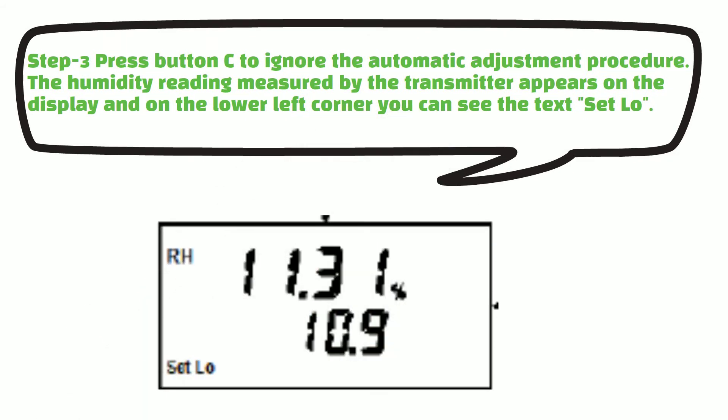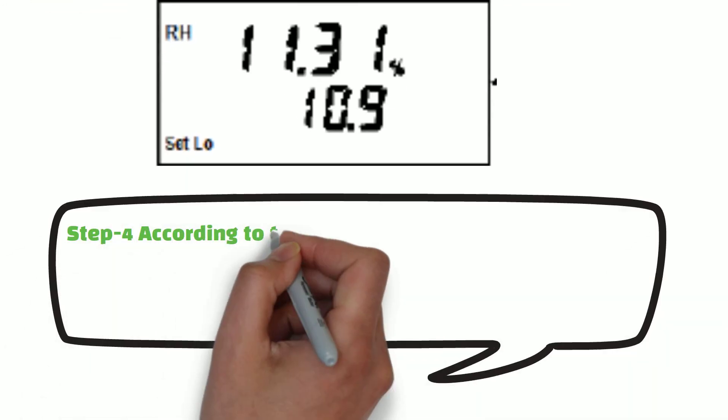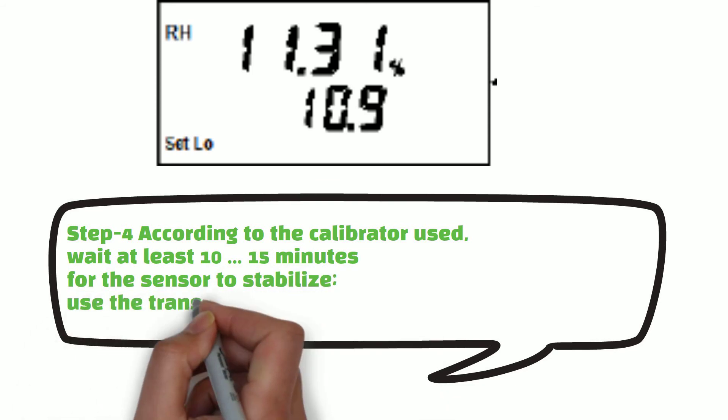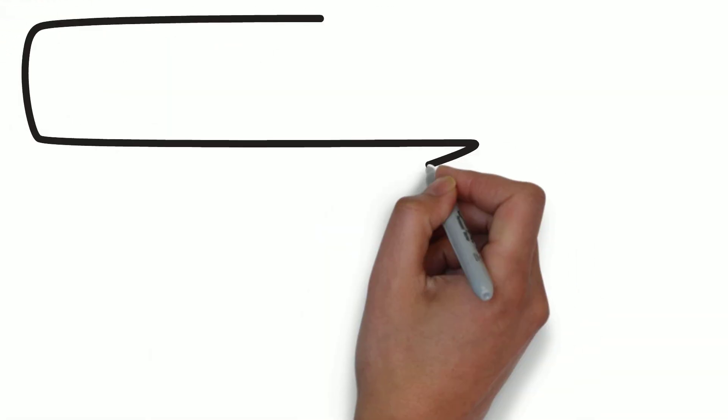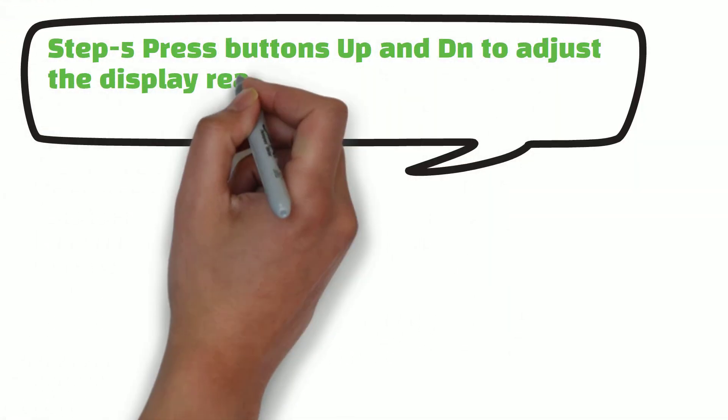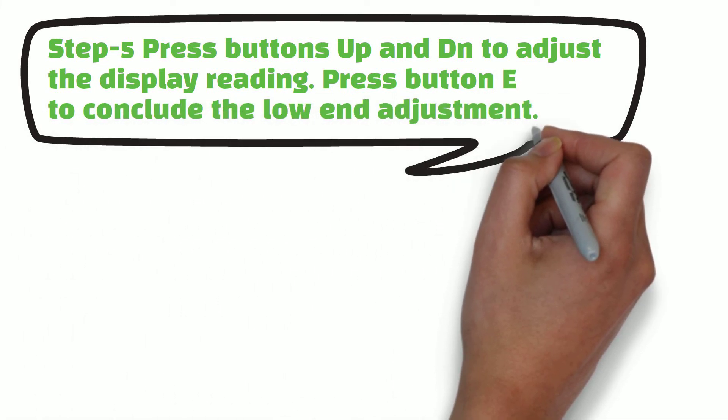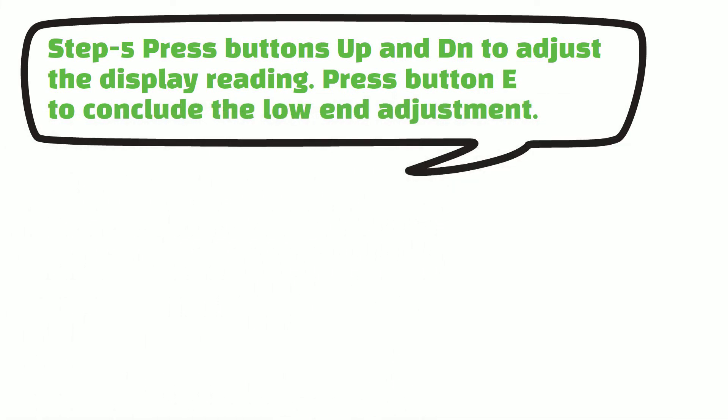In this step, you have to be patient and wait 10 to 15 minutes till humidity values stabilize. When humidity values stabilized, use up and down key to adjust display reading to 11% RH. After this press enter button to accept this value.